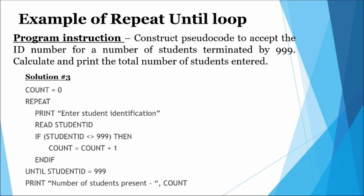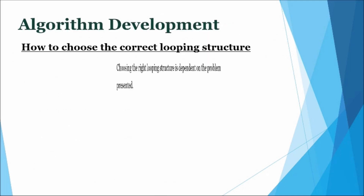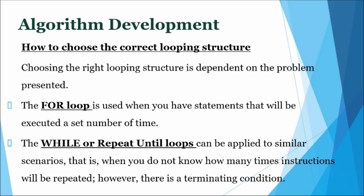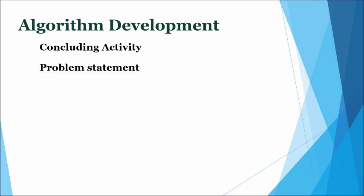The solution then ends through the display of the total number of students entered. How to choose the correct looping structure: choosing the right looping structure is dependent on the problem presented. The for loop should be selected when you have statements that will be executed a set number of times. The while or repeat-until loops can be applied when you do not know how many times instructions will be repeated, but there is a terminating condition or value. The selection between while and repeat-until depends on whether the compound statement needs to be executed before or after the condition is evaluated.